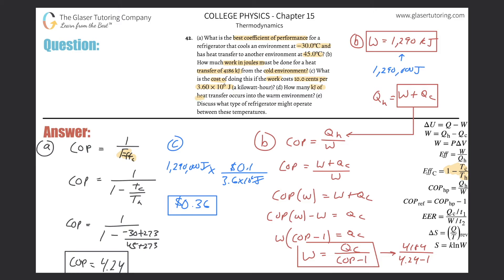And then how about now letter D? How many kilojoules of heat transfer occurs into the warm environment? So basically, they're asking us to now solve for Q sub H. Most likely, the easiest way to do this is to probably use this particular formula, because we know all the other variables. It's going to be the work is equal to Q sub H, the heat transferred into the warm environment, minus the heat transferred from the cold environment. So if I want to solve this for Q sub H, just simply add this on over to the left hand side. So we're going to get the work plus the Q sub C will equal Q sub H and just plug in. We found the work.